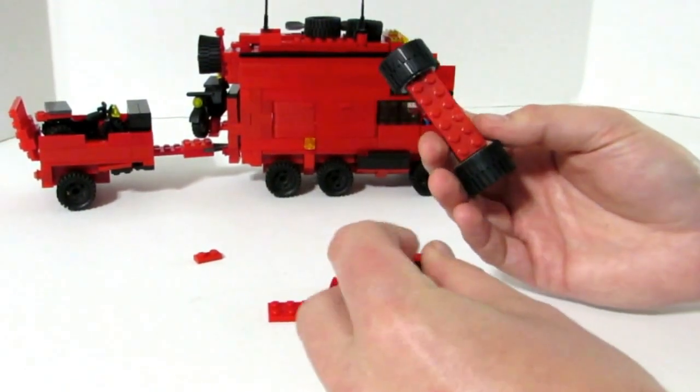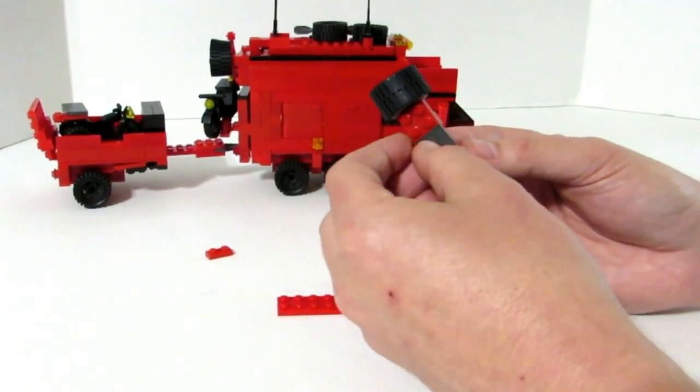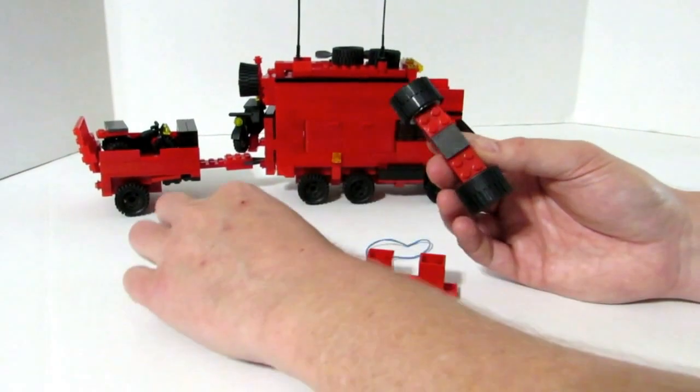On the top we also have to do something similar so we're going to take a flat piece. This is a 1x4 flat piece. This goes right in the middle on the top and then each side gets a 1x2.